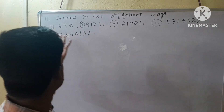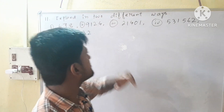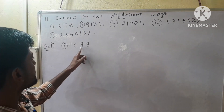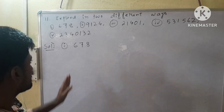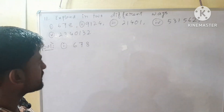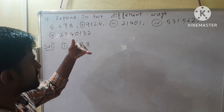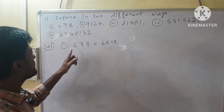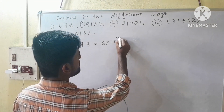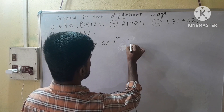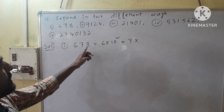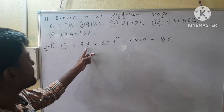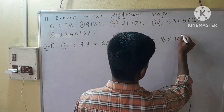Our next question is question number 11 — expand in 2 different ways. Roman number 1, we have 6, 7, 8. Each digit is in decimal system, so the base will be 10. We expand these 3 digits in base 10: 6 into 10 to the power 2, plus 7 into 10 to the power 1, plus 8 into 10 to the power 0.